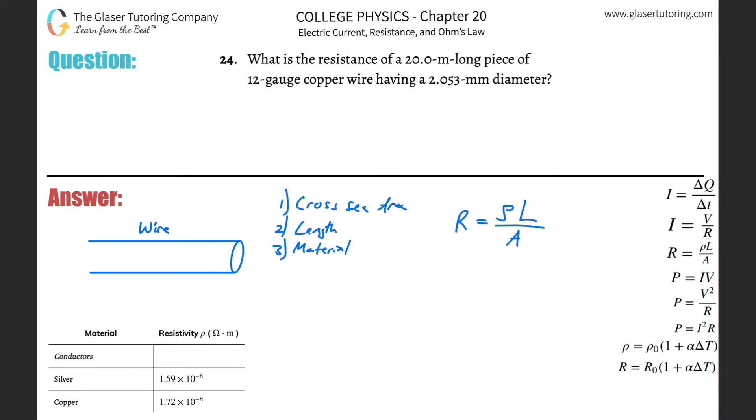Now if you notice, just mathematically, if the length increases of the wire, what happens to the resistance? It's a direct relationship and therefore the resistance goes up. That's just what we explained. If the cross-sectional area of the wire goes down, meaning it gets smaller, what happens to the resistance? It goes up.